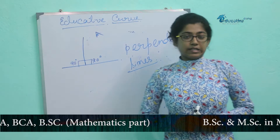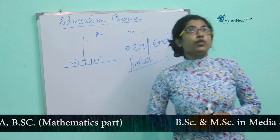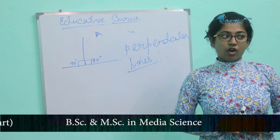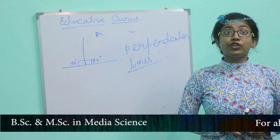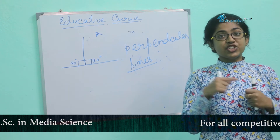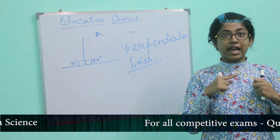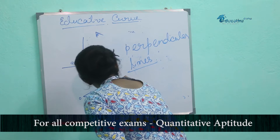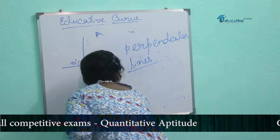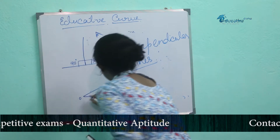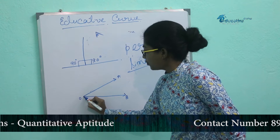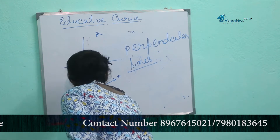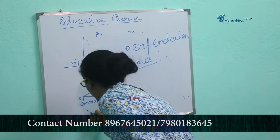What are angles? When two lines cross with each other, or we can say when two rays share a common point, they create an angle. These two rays, OA and OB, share a common point which is O, and that is called the vertex of the angle.